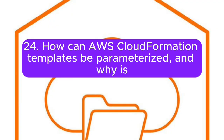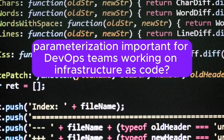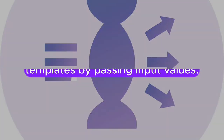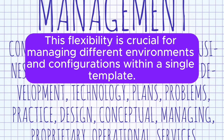Question 24: How can AWS CloudFormation templates be parameterized, and why is parameterization important for DevOps teams working on infrastructure as code? Answer: Parameterization allows DevOps teams to customize templates by passing input values. This flexibility is crucial for managing different environments and configurations within a single template.